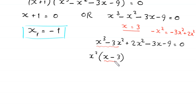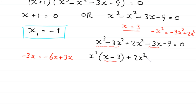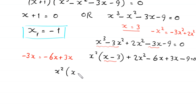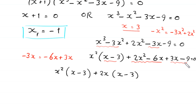To match the factor (x - 3), we rewrite -3x as -6x + 3x. Then from 2x² - 6x, we factor out 2x to get 2x(x - 3). From 3x - 9, we factor out 3 to get 3(x - 3). So we have x²(x - 3) + 2x(x - 3) + 3(x - 3) = 0.